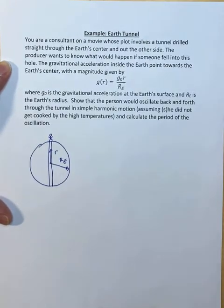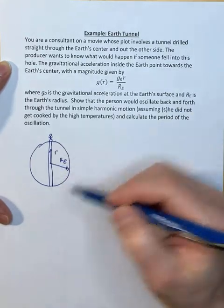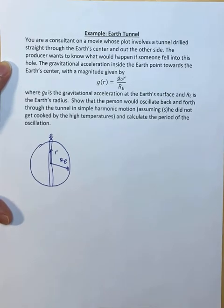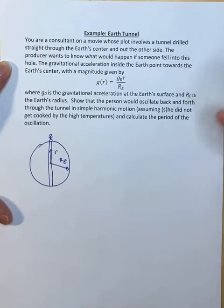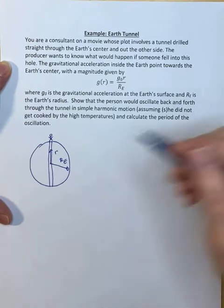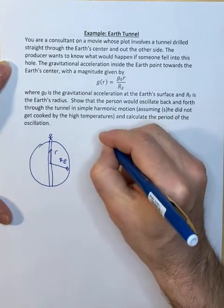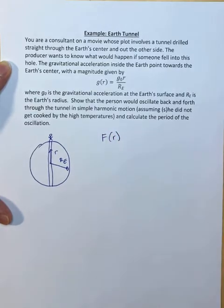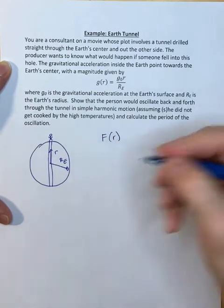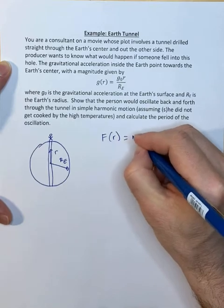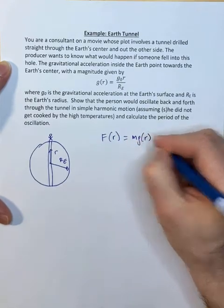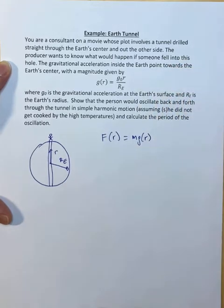So now it's asking to show that the person would oscillate back and forward through the tunnel in simple harmonic motion. So how to do that? Well, the question is what is that motion going to be and so we know what we have to do. We have to essentially look at the forces acting on the person. Well, the only force that's acting on the person of course is going to be a function of r, essentially the force of gravity. So that's not just mg that's mg as a function of r, right? So the gravitational acceleration is actually changing with radius.